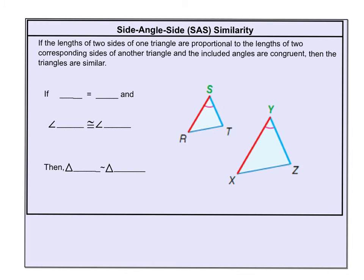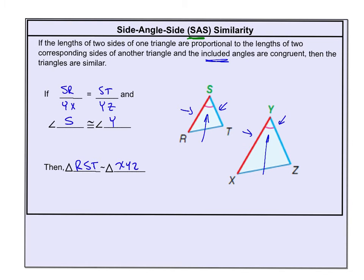Side-Angle-Side similarity requires two sets of sides in proportion and the included angle between them. So we look at angle S and angle Y, and check if SR over YX equals ST over YZ. The angle must be the included angle — the one between those two sides. If those conditions are met, then triangle RST is similar to triangle XYZ. Again, similar, not congruent.